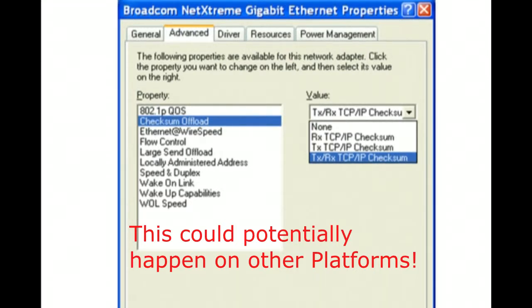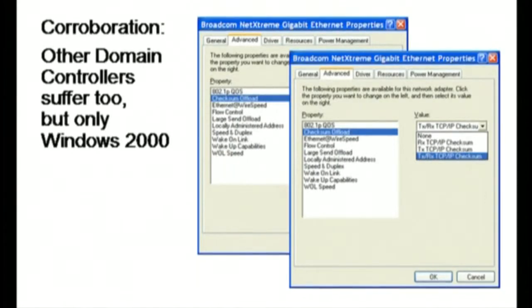We exercised those machines by using the QCheck agent so we could see the machine truly with an offered load. We did find that and corroborate that other domain controllers suffered too, but we didn't find it on Windows 2003 server. We only found it on Windows 2000 servers, but we found it on pretty much every one we looked for.